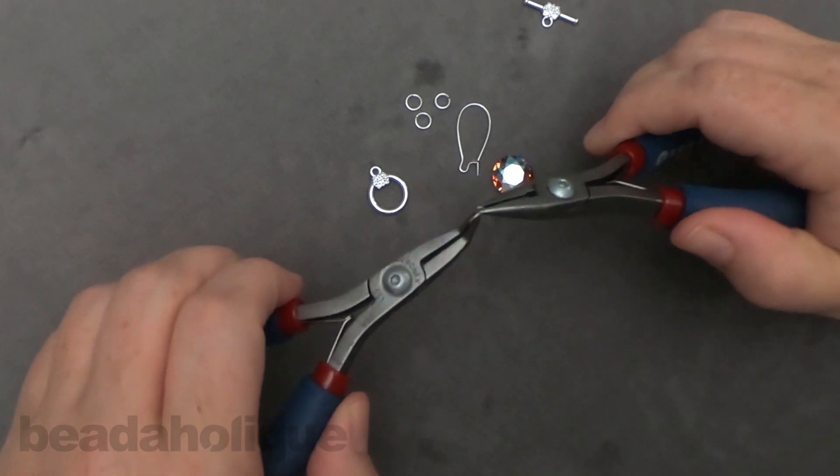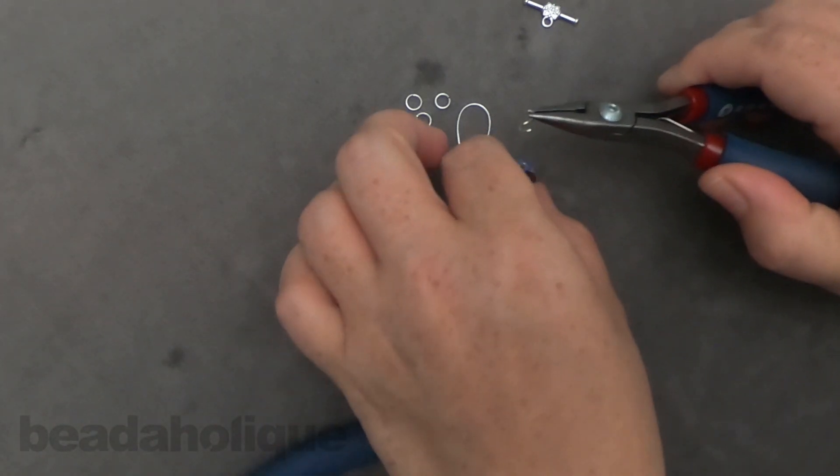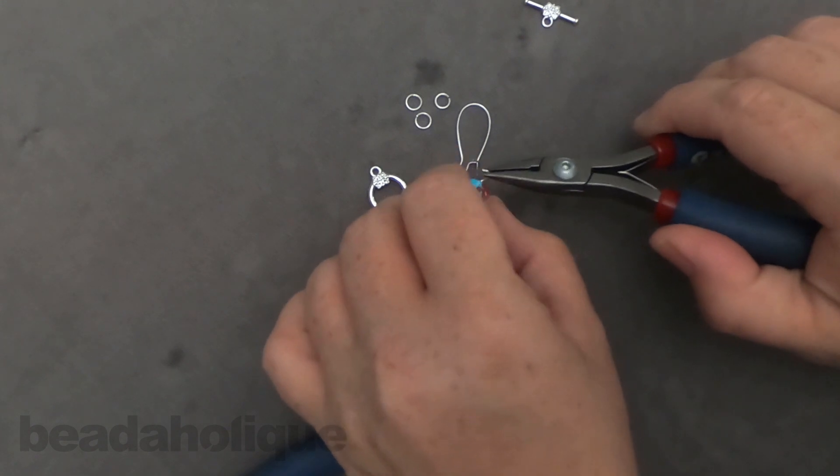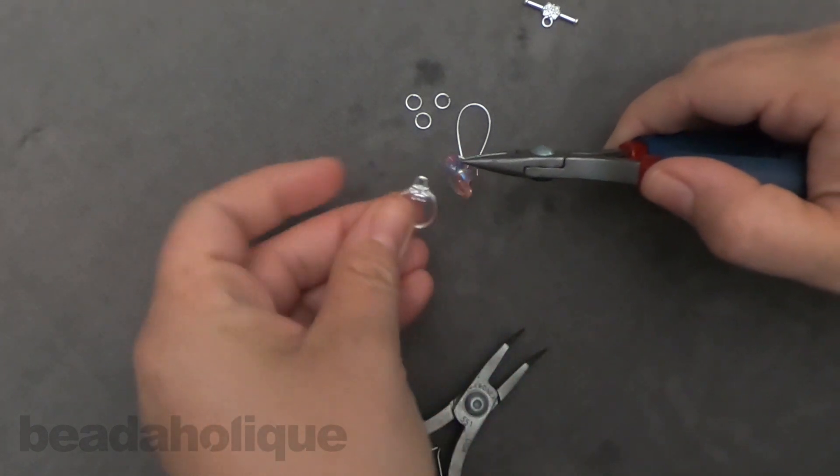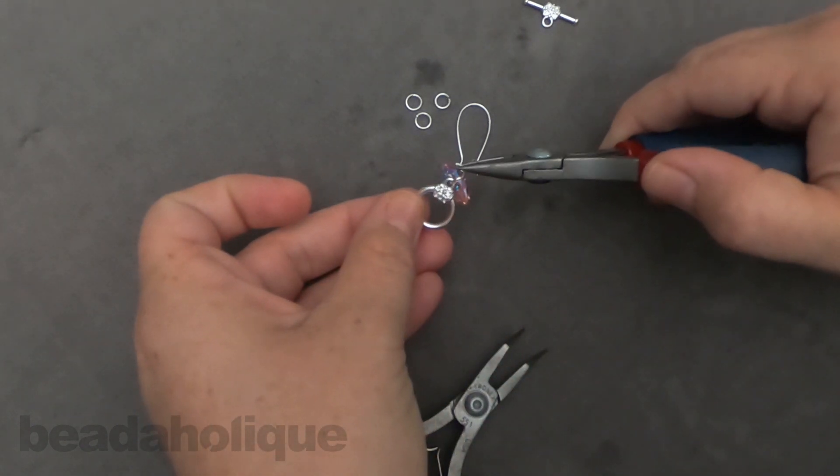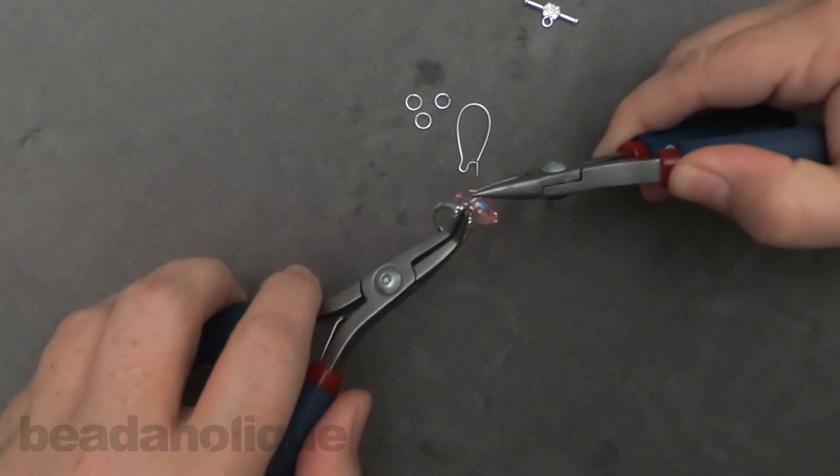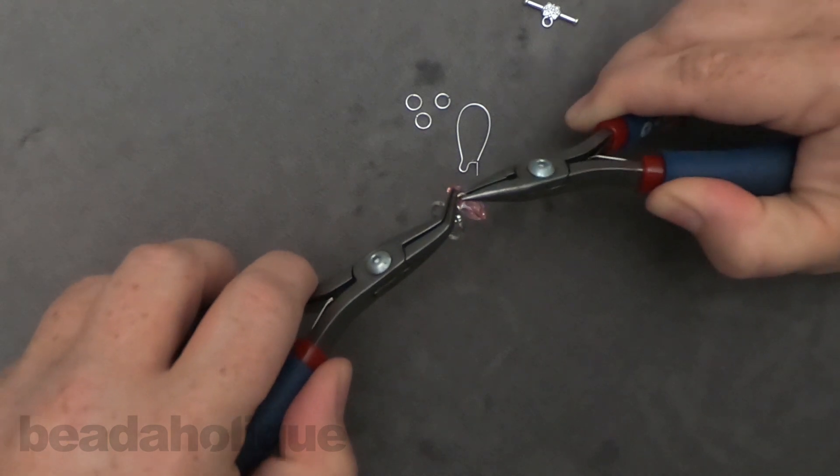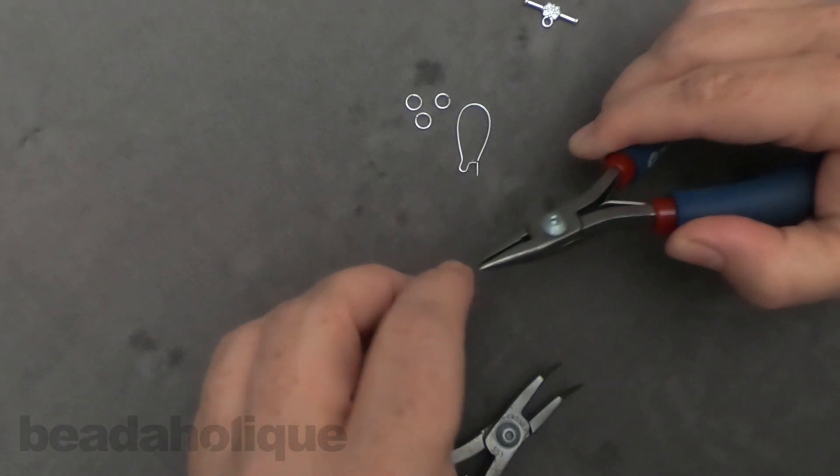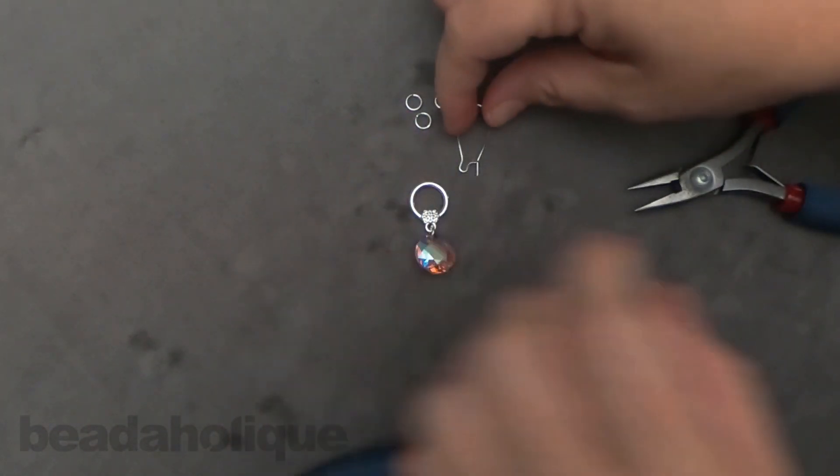I'm going to attach it to my pendant here and just kind of wiggle that through, and I'm going to attach it to the loop side of the toggle clasp. So I'm just going to close that up with my chain nose pliers and I'm almost done.